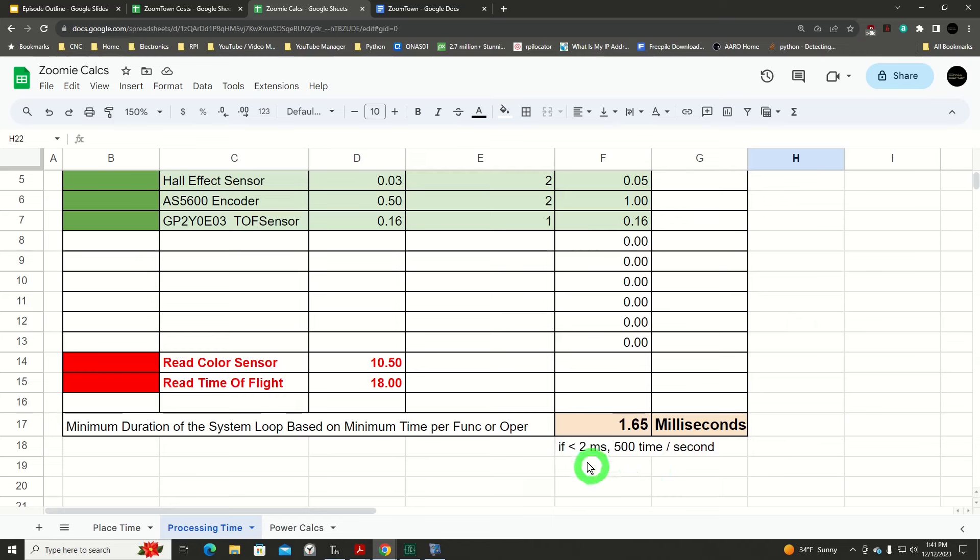Now that's just to read the sensors. There's a whole lot of other stuff that we got to do within a process loop in our code. Now right now, just so you get a little better perspective if you're not familiar with milliseconds and time. If my time is less than 2 milliseconds, 500 times per second, I can process those sensors, which is pretty fast. But even at 2 milliseconds, we are now at 4 millimeters of travel distance.